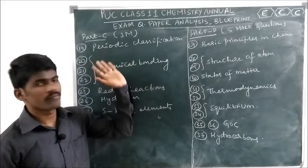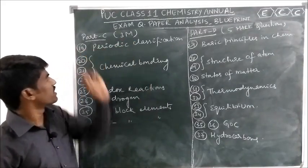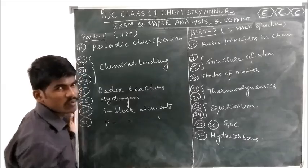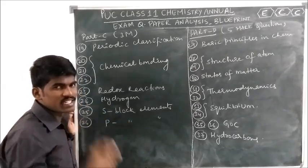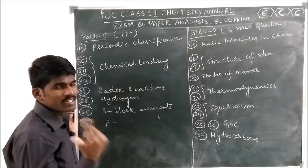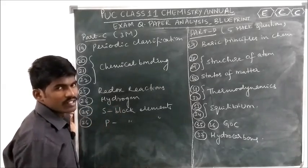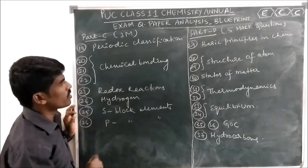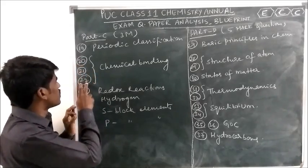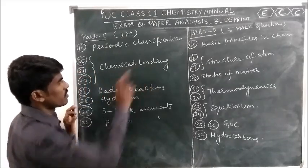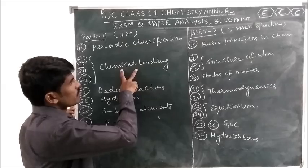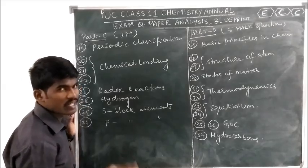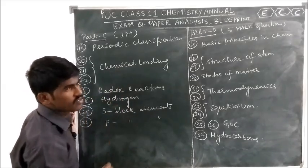Part C — 3-mark questions. Question 19 is from Periodic Classification of Elements. Most cases they will give periodic properties — like define ionization energy and how it changes in period and group, or define atomic size and how it changes in periods and groups. Questions 20, 21, and 22 are all from a single chapter — Chemical Bonding. So if you read Chemical Bonding thoroughly, you can attempt all three 3-mark questions from that chapter.